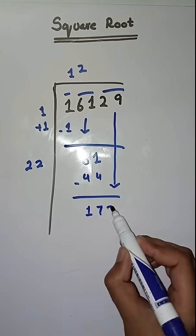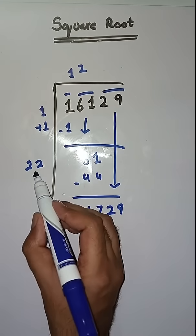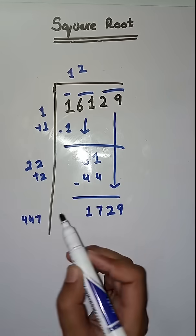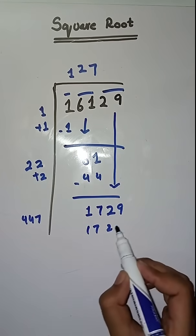Next pair is 29. Bring it down. Here we do 22 plus 2 which is equal to 44. Now we will take a number 7. 447, 7's are 1729.